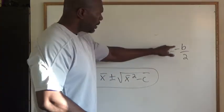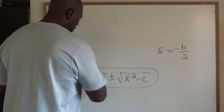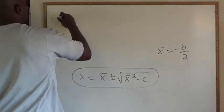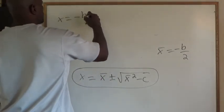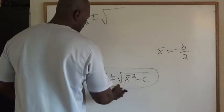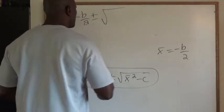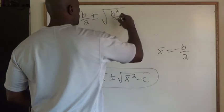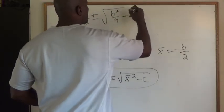Now again, X bar is negative B over 2. So I would like to plug that in for X bar. So I'm just saying X is negative B over 2 plus or minus the square root, negative B over 2 squared is B squared over 4, B squared over 4 minus C.